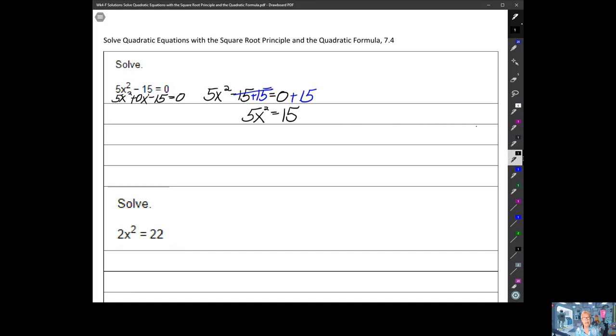Now I need to get the x² by itself. This is 5 times x². So let's divide by 5 and divide by 5. x² equals 15 divided by 5, which is 3.